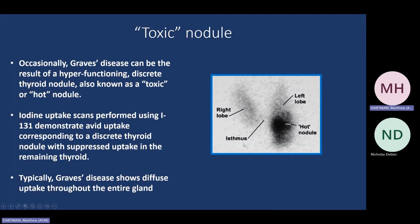For radionuclide uptake, patients will swallow either I-123 or I-131 — it's radioactive and gets taken up by thyroid cells. You can see where you have hot spots and where you might have cold spots. Cold spots are actually more worrisome. A hot spot, like in this example, is a hot nodule — and you can see it is suppressing the rest of the thyroid gland. With Graves' disease, you'll have diffuse uptake throughout the entire gland.